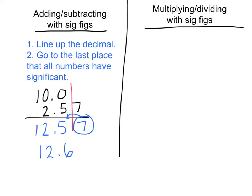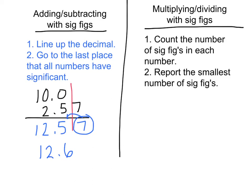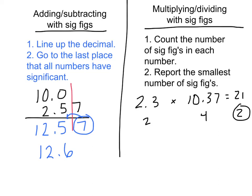For multiplying and dividing with sig figs, count the significant figures in each number and report the smallest number of significant figures. For instance, 2.3 × 10.37: 2.3 has two significant figures and 10.37 has four, so I can only report two significant figures. The answer should be around 24 — you report only two significant figures. Make sure you can do both adding/subtracting and multiplying/dividing with sig figs for the test.